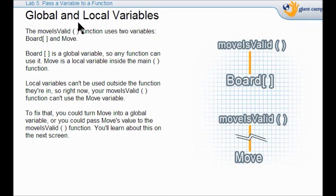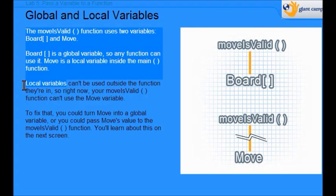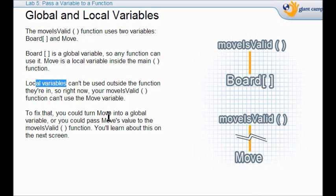Now last session we talked about global and local variables. Remember, we declare global variables that can be used throughout the whole program. And local variables that can only be used between the curly brackets. We have move is valid function. And it has two variables in there. We have the board variable and we have the move variable. Board variable is a global variable. So it can be used in many functions. Any function can use it. But move is a local variable because it's inside of the main function. So once we leave the main function, it's not operative. Local variables cannot be used outside of the function they're in.